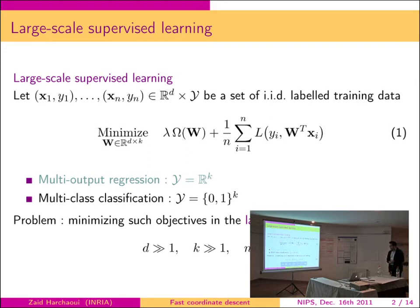Typical examples of this are multi-output regression, where the output space is just R to the power of K, and multi-class classification, which is going to be the focus here. We look at such situations where we have a large number of features, so d is very large, large number of classes, and obviously a large number of examples.